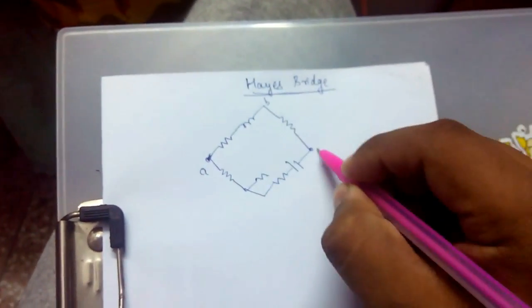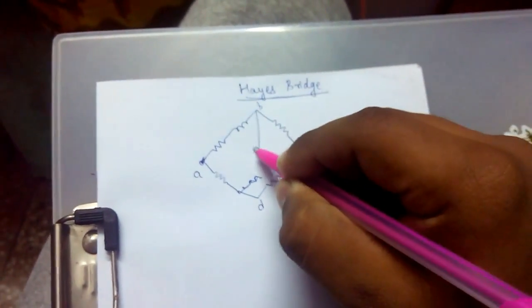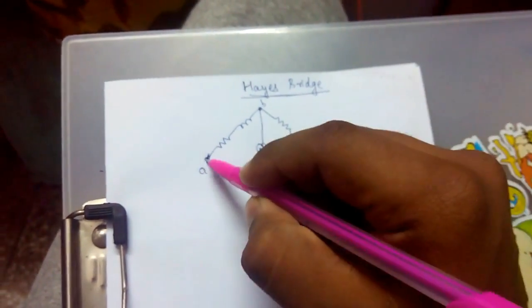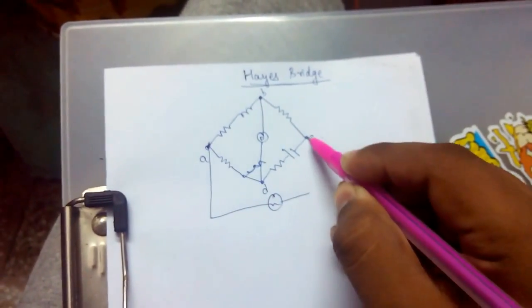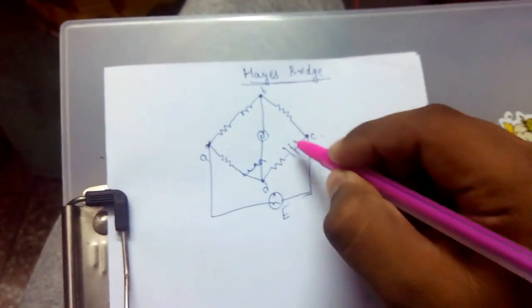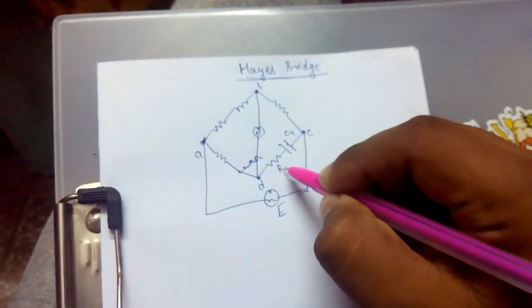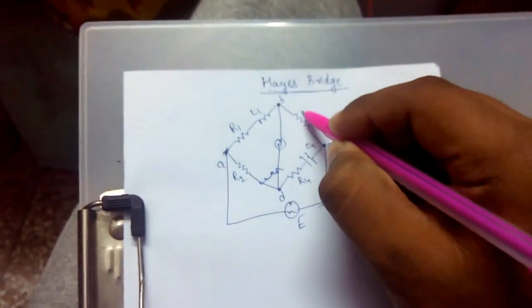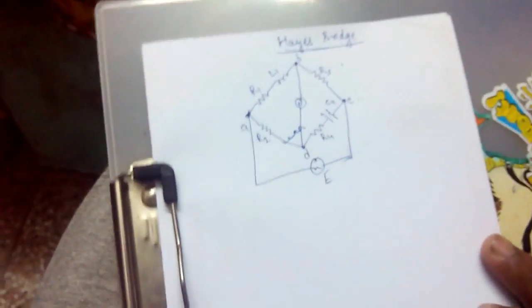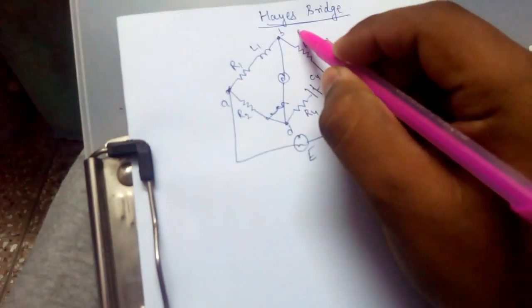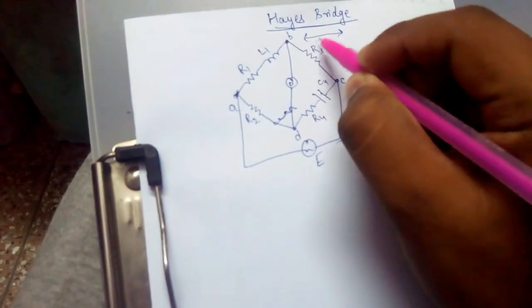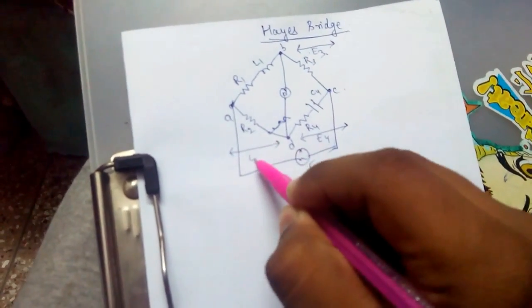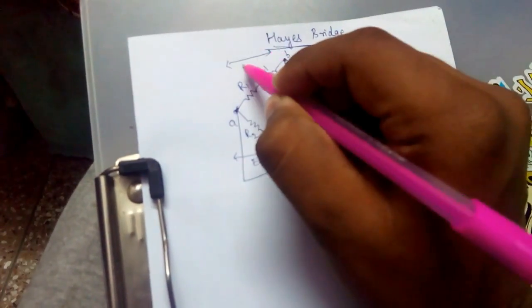The bridge has four nodes A, B, C, D. A galvanometer is connected across B and D, and an external source E is connected. The components are: C4 and R4 in one arm, R2 and R1 in another arm, L1 in series, and R3 in the remaining arm. The potential drop between nodes: BC is E3, CD is E4, AD is E2, and AB is E1.